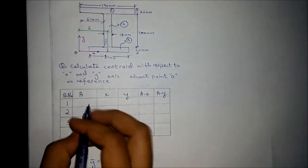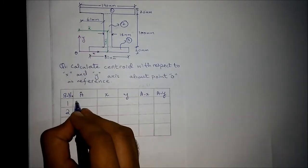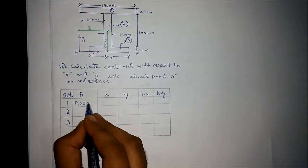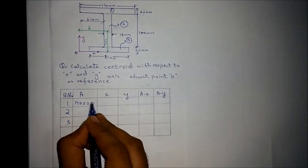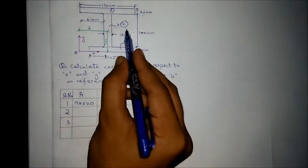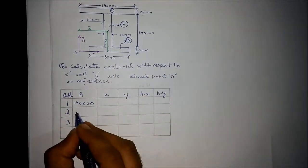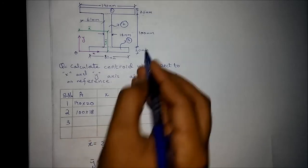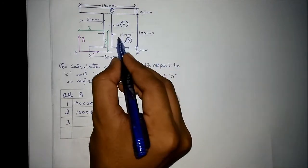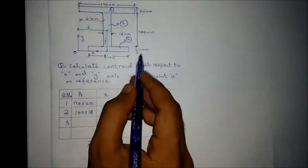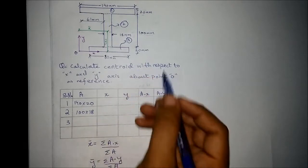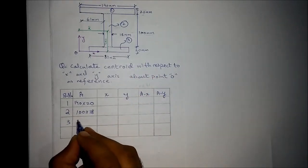The area for the first shape is 140 times the thickness of 20 mm. The area for the second shape is 100 times the thickness of 20 mm. The area for the third shape is also based on 20 mm thickness.